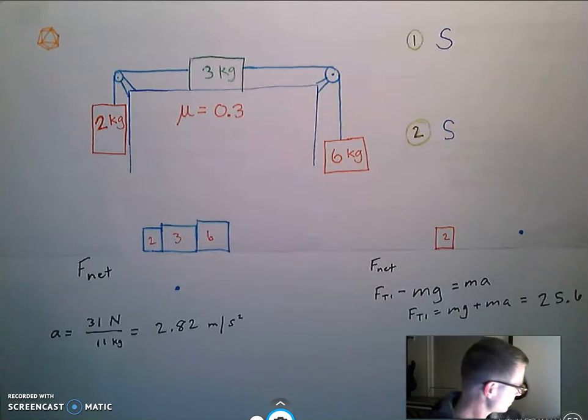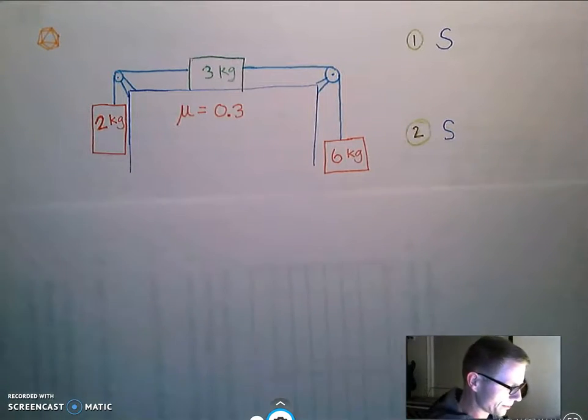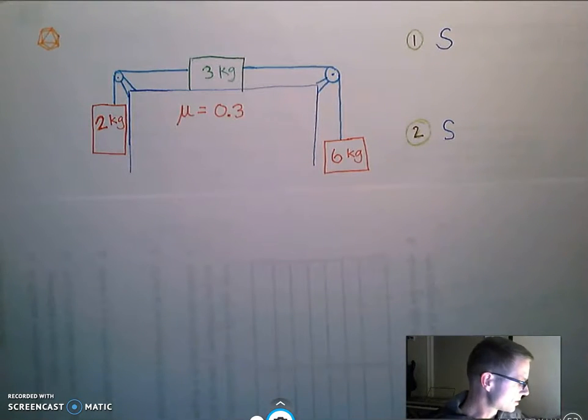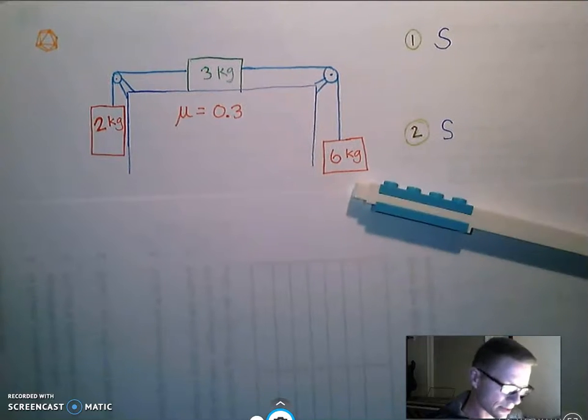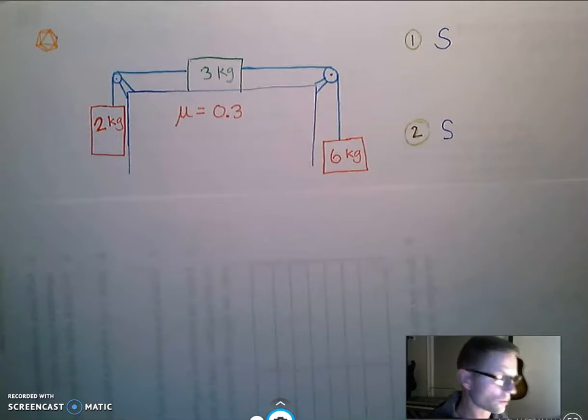So please ignore this solution down below and just focus on our problem. Our problem is a frictional surface but on either side you can see that we have these two masses dangling. Now what I really want to say is that there's two S's involved here in terms of the overall strategy.